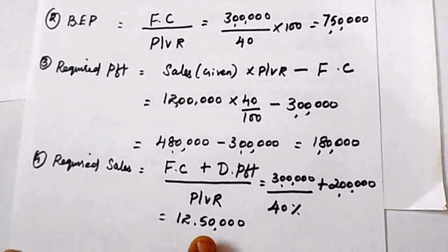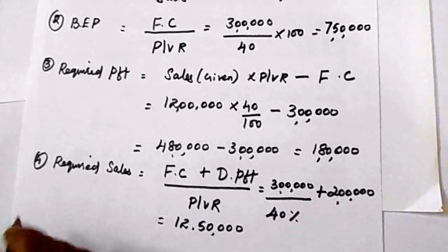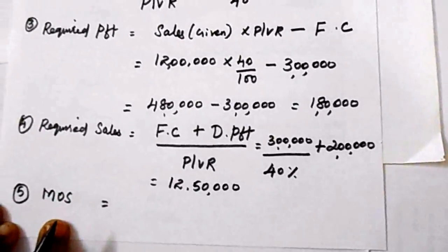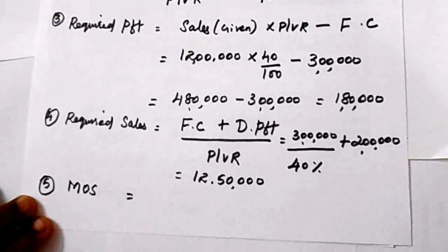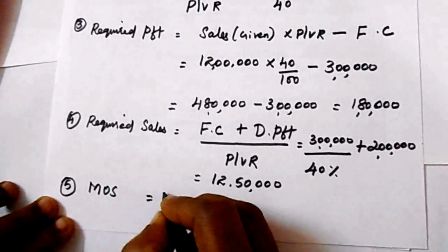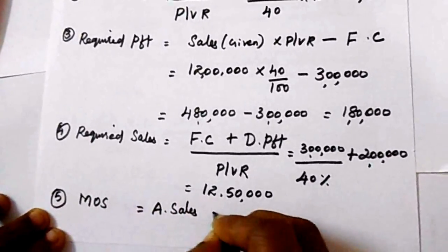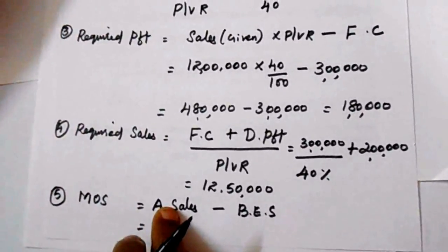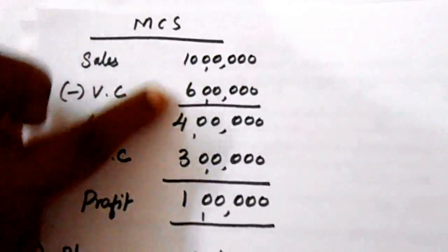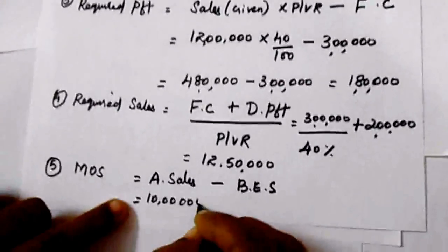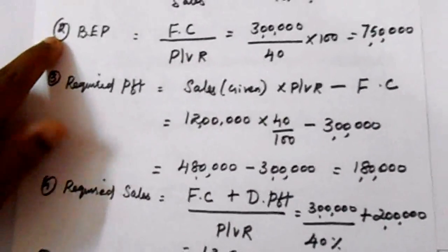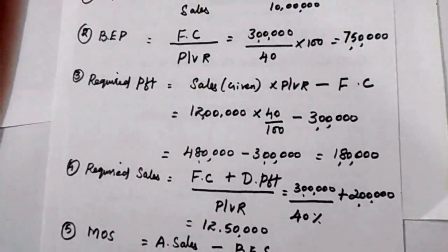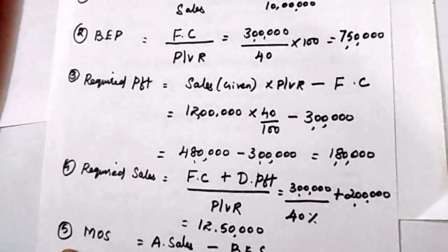Fifth solution — margin of safety. Margin of safety is the difference between actual sales and break-even sales, which represents profit. Formula: Margin of Safety = Actual Sales − Break-Even Sales. Actual sales according to this problem is 10 lakhs. Break-even sales from the second solution is 7 lakhs 50 thousand. So margin of safety = 10 lakhs minus 7 lakhs 50 thousand = 2 lakhs 50 thousand.